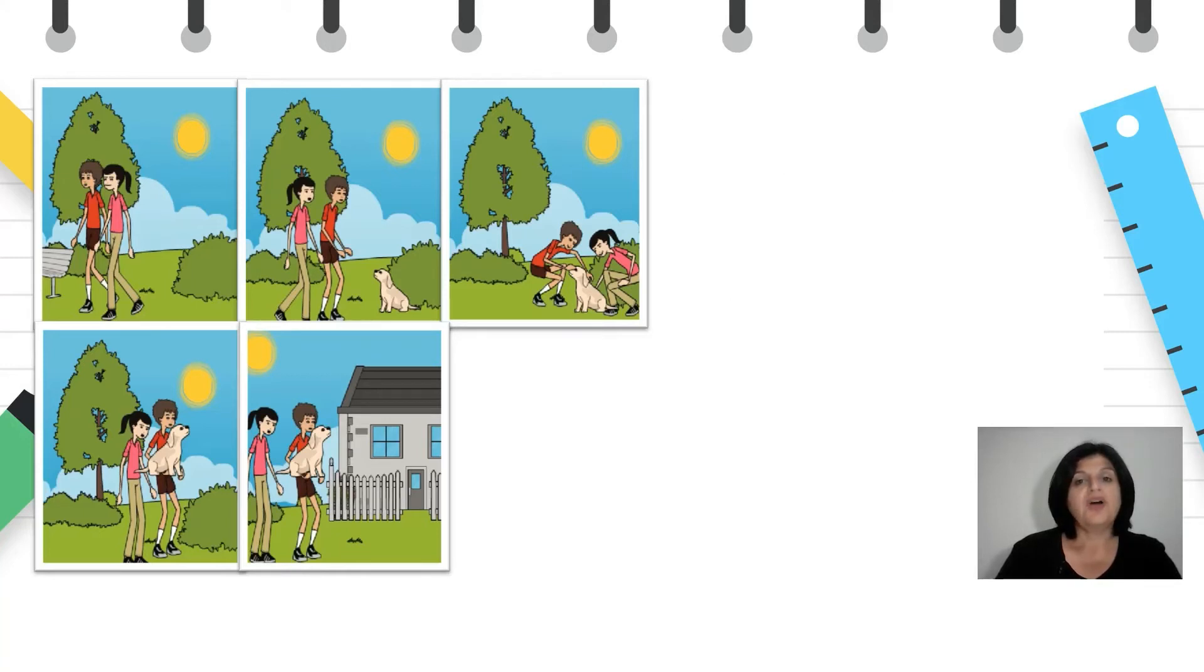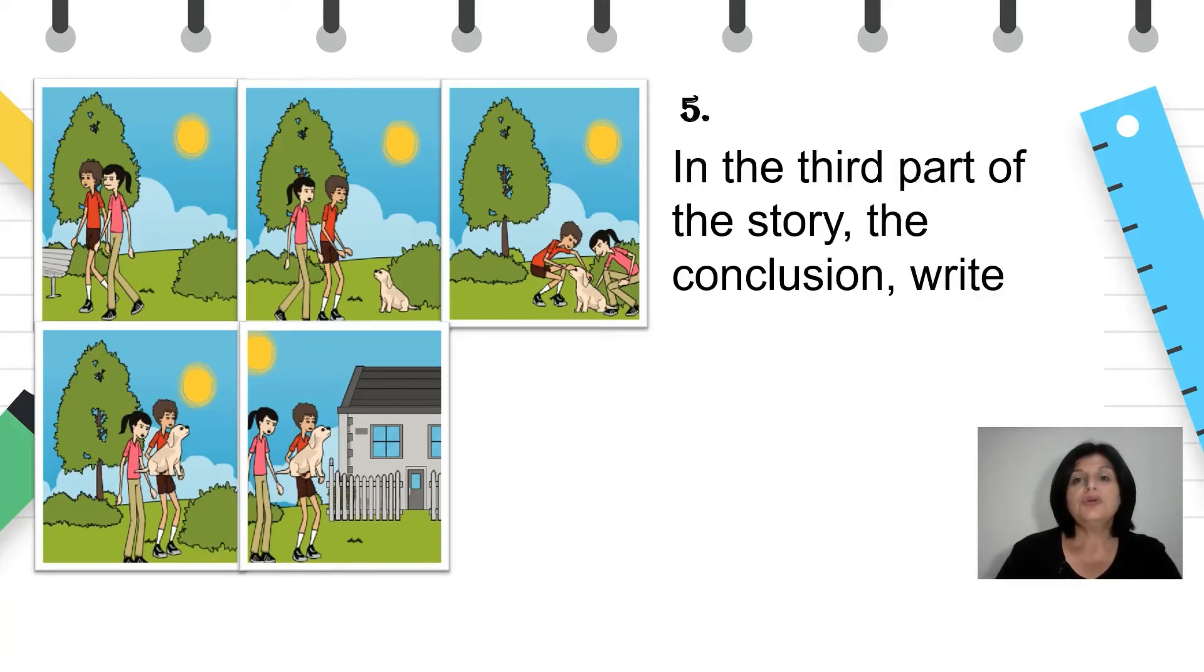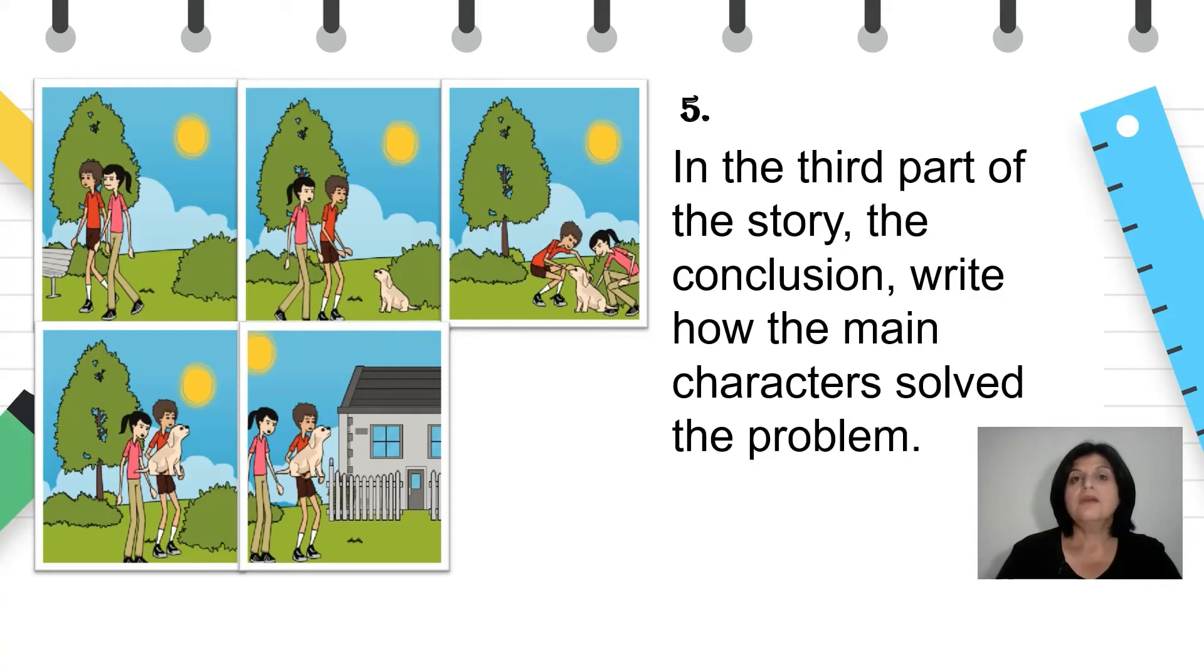Number five. In the third part of the story, the conclusion, write how the main characters solved the problem.